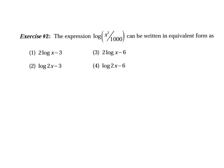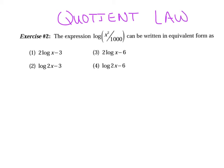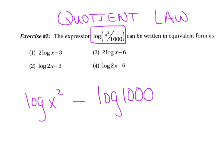In our second example, let's identify what property we're using. What's happening between the x squared and the 1,000? They're being divided. So we're going to use the quotient law, which means as I expand this one term into two terms, I'm going to use a minus sign. I can say log of x squared minus the log of 1,000. What base am I working with? This is base 10 — the invisible common base. You're welcome to put a 10 in there; it's optional.